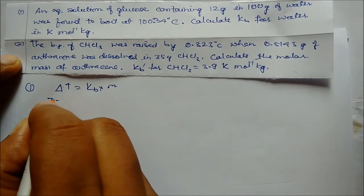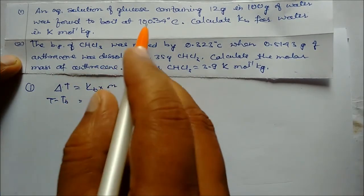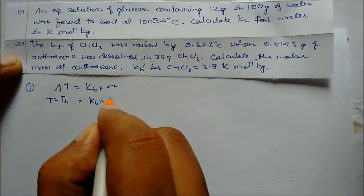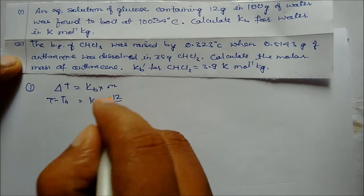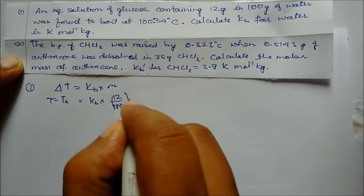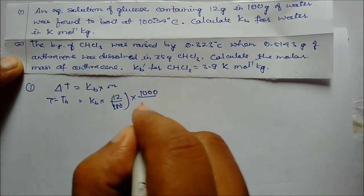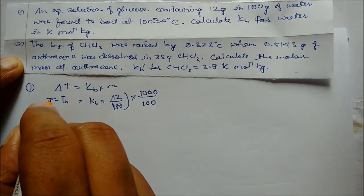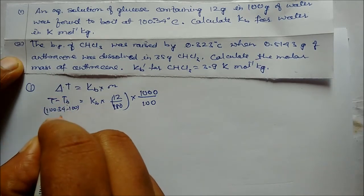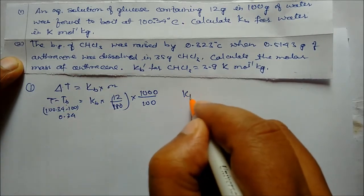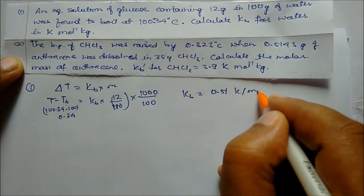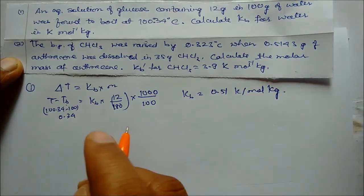Delta T = 100.34 - 100 = 0.34. Molality is calculated as: (weight / molar mass of glucose) × (1000 / weight of solvent) = (12/180) × (1000/100). On solving, we get Kb = 0.51 Kelvin per mole per kg. This is our answer.